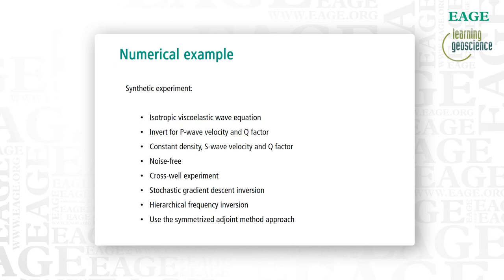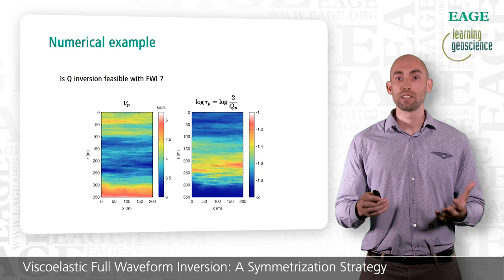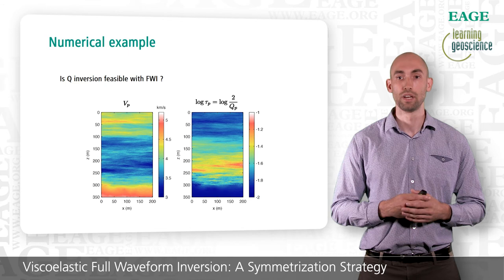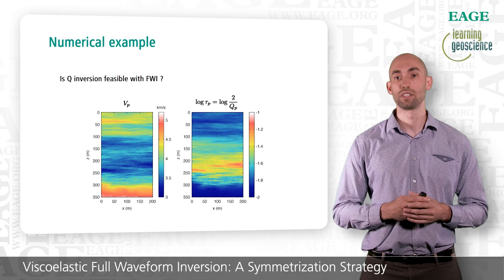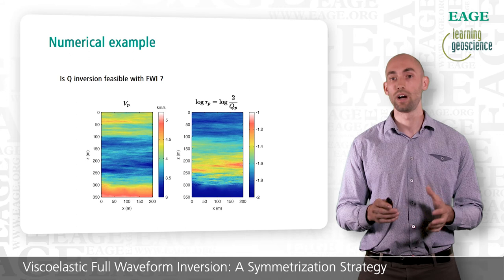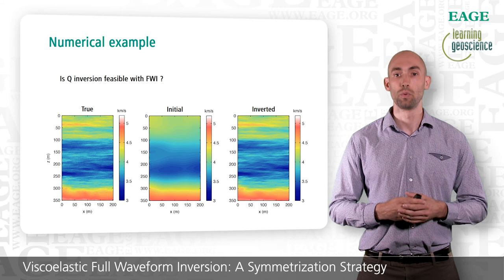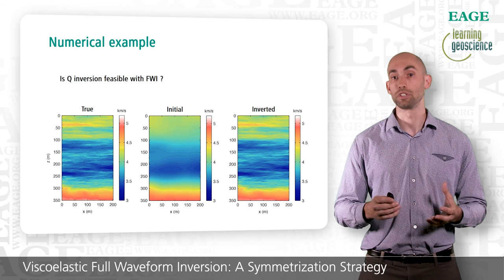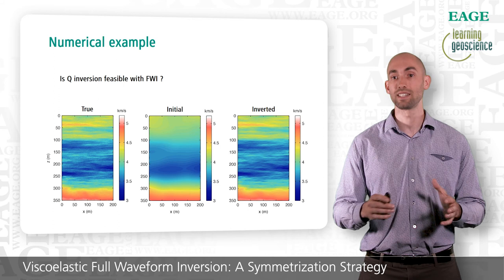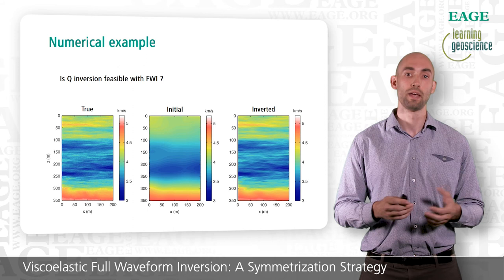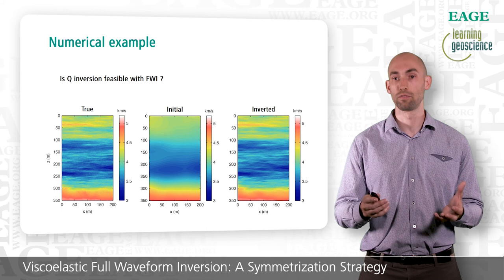The first question we may ask is: is it possible to invert for both velocities and Q-factors? The two models we want to reconstruct are VP on the left and QP on the right. Note the very high velocity contrasts, from 3000 m/s to more than 5000 m/s in places, and QP is also highly variable, with Q lying between 20 and 200. For P-wave velocity, the true model is on the left, the initial model — a smoothed version — is in the middle, and the inverted model is on the right. Full waveform inversion succeeded in reproducing most of the fine-scale heterogeneities. Only the finest details are not reproduced, as expected due to the band-limited nature of the inversion. Bear in mind this experiment is noise-free with perfect physics, so we expect FWI to perform very well.